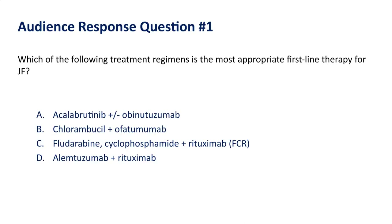Audience response question one: which of the following treatment regimens is the most appropriate first-line therapy for our patient? A) acalabrutinib plus or minus obinutuzumab, B) chlorambucil plus ofatumumab, C) fludarabine, cyclophosphamide, and rituximab (FCR), or D) alemtuzumab plus rituximab? The most appropriate answer is A, acalabrutinib plus or minus obinutuzumab. This patient lacks cytogenetic markers associated with a good response to FCR, ofatumumab is not a commonly selected anti-CD20 antibody in CLL, and the alemtuzumab-rituximab combination is no longer recommended.